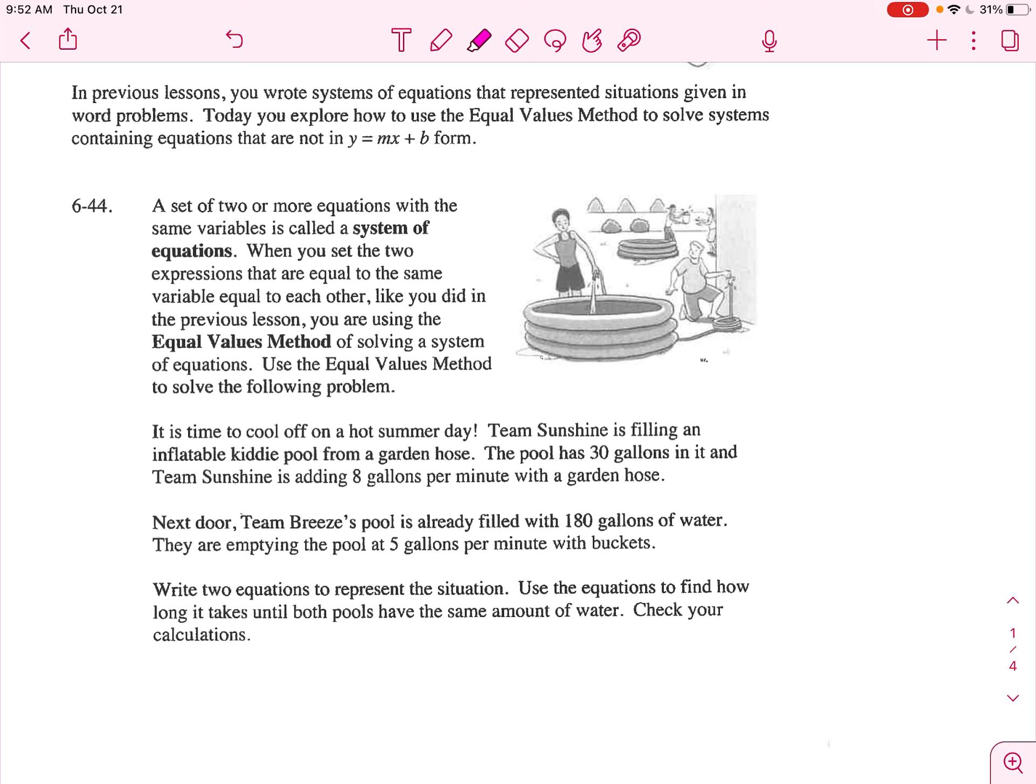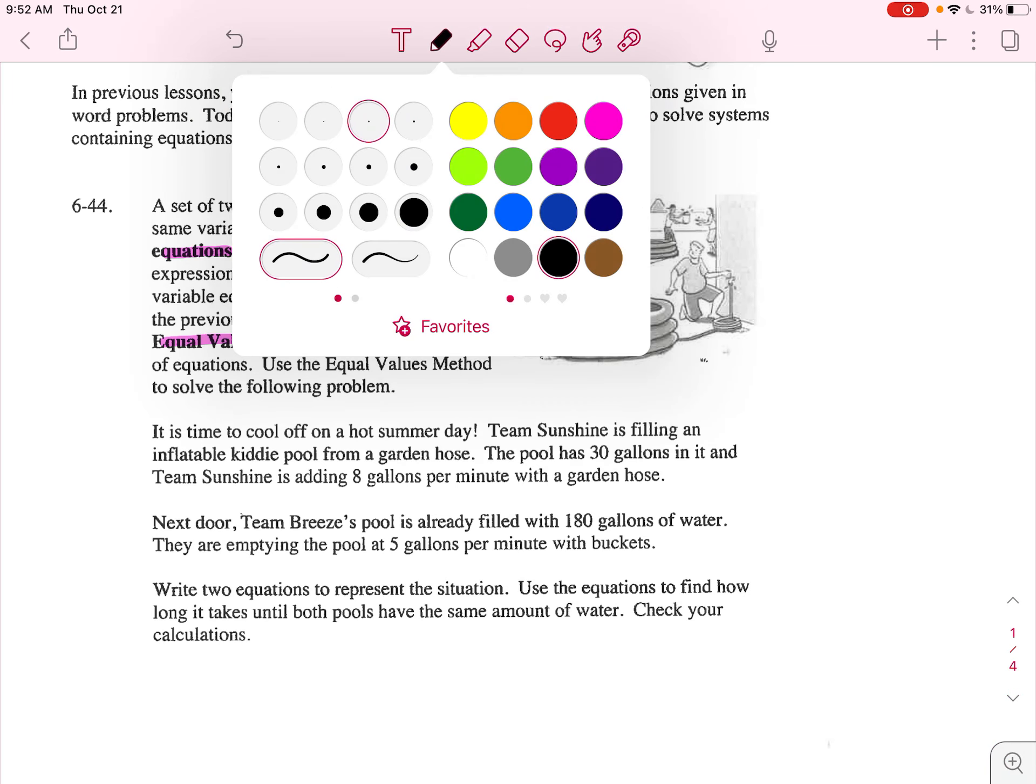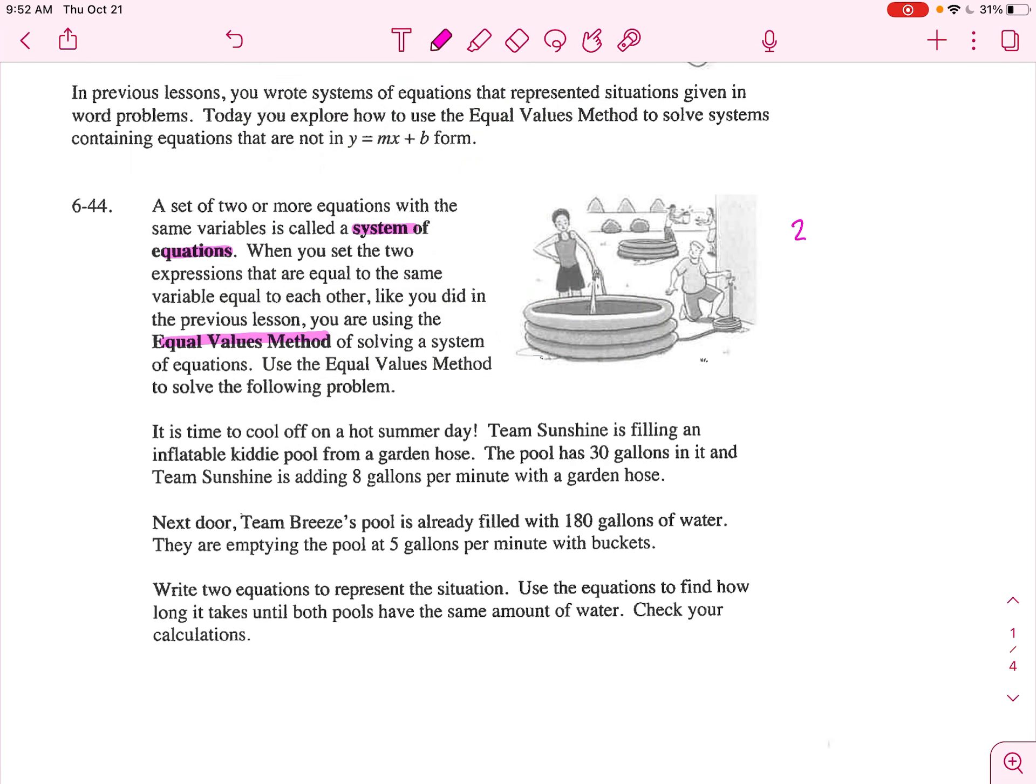When we have two equations, two or more, it's called a system of equations. We can solve this in multiple different ways. One of the ways is the equal values method.